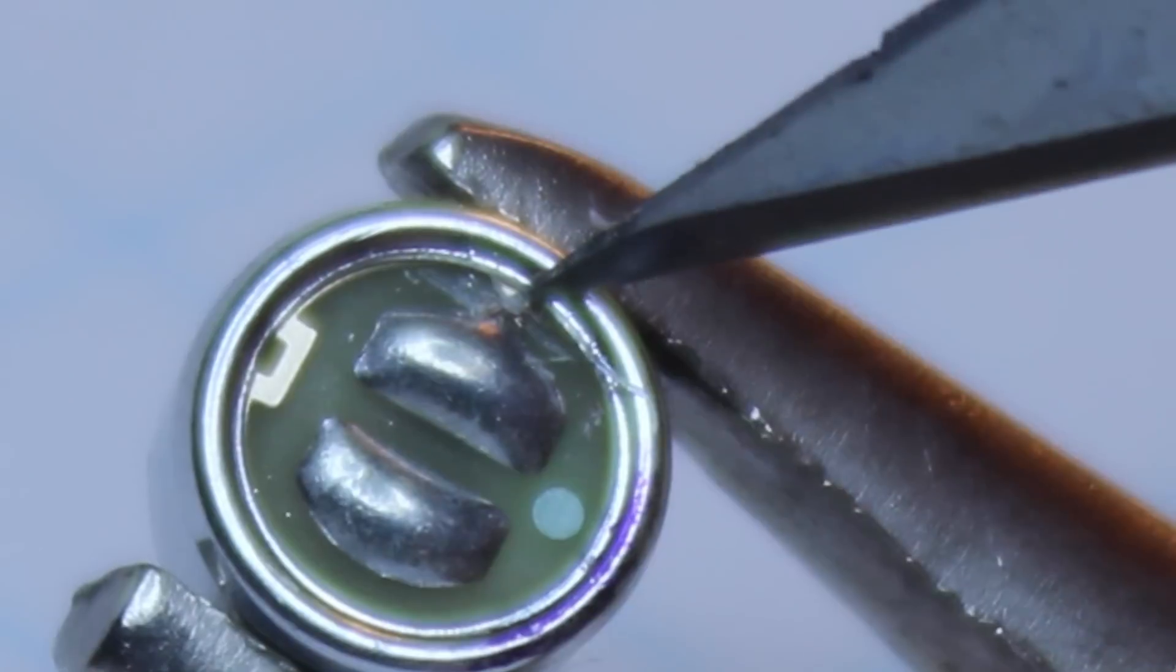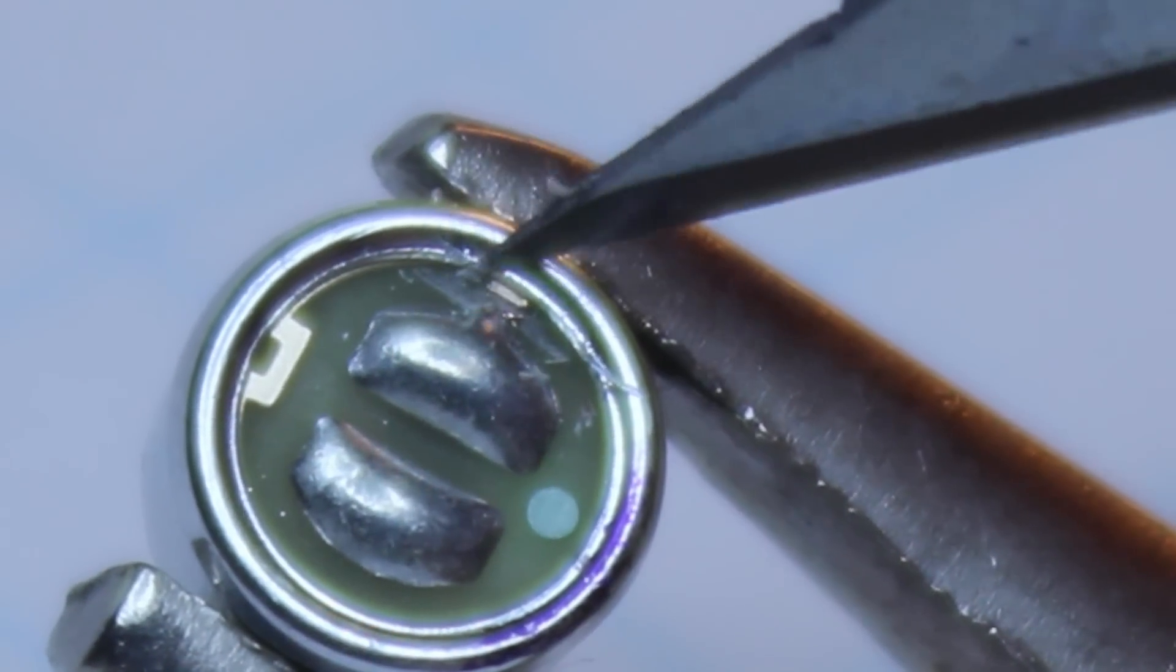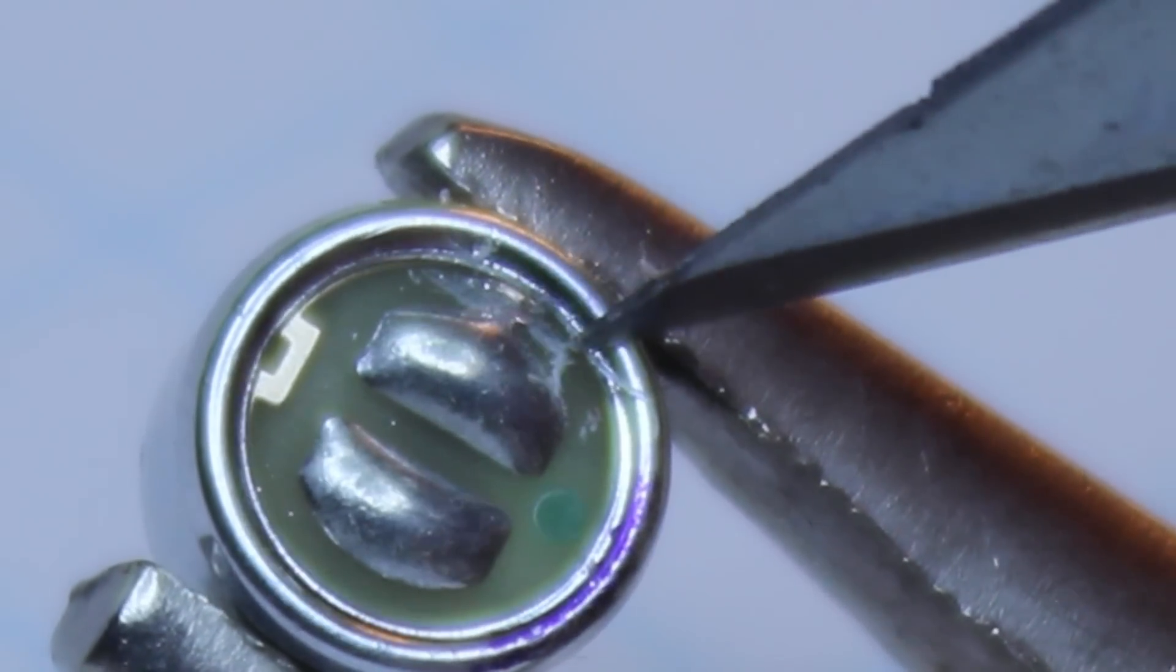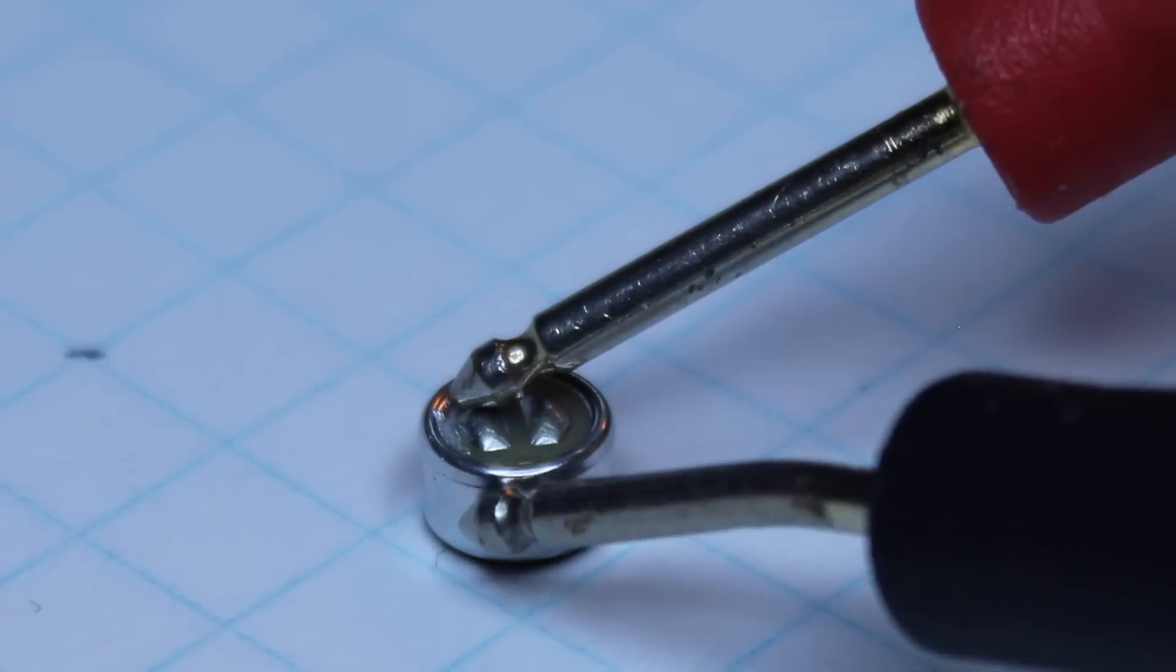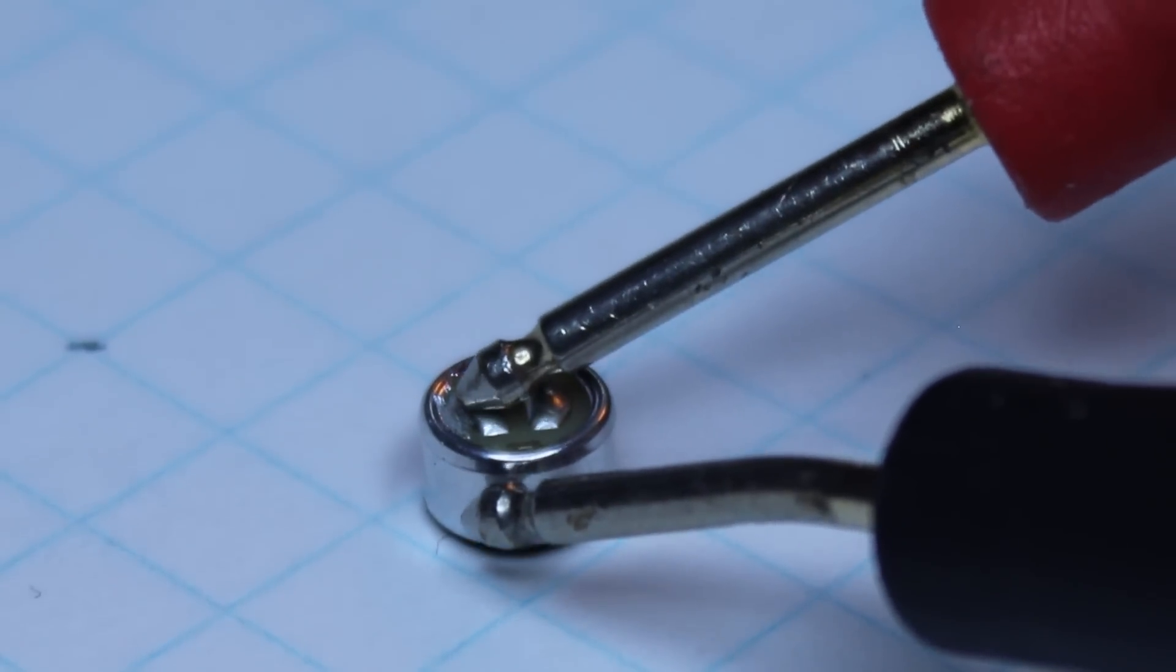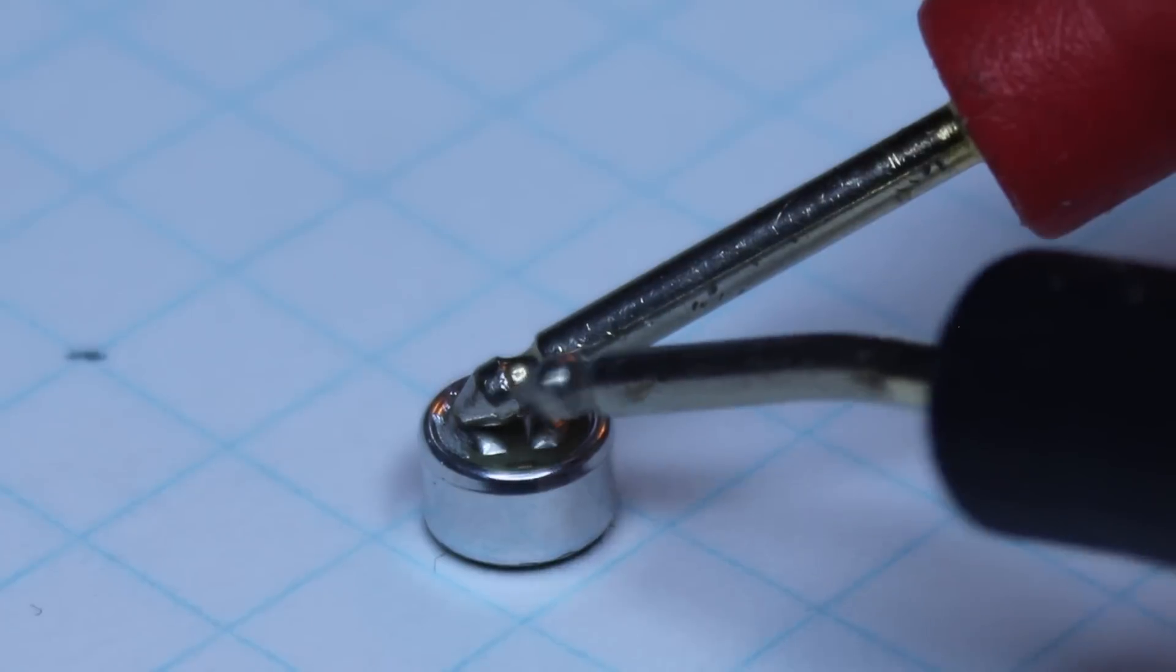Cut the trace between the capsule's source terminal and the aluminum case. A fresh exacto blade works well for this. Once the trace is completely scraped away, use a multimeter to verify there is no continuity between the source terminal and the case.